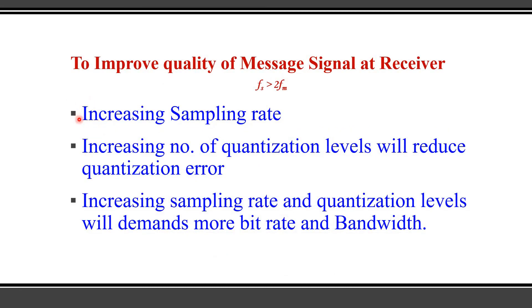To improve the quality of the audio signal we can do two things: increase the sampling rate, or increase the number of quantization levels — which reduces the quantization error. However, increasing sampling rate and quantization levels demands more bit rate and bandwidth, so we have to make a trade-off between quality, bit rate, and bandwidth.